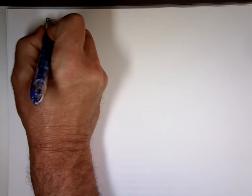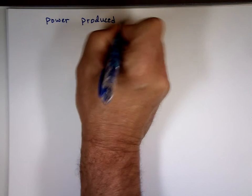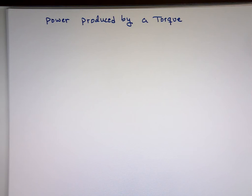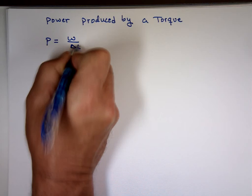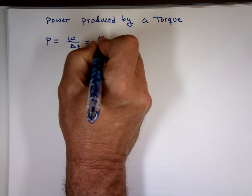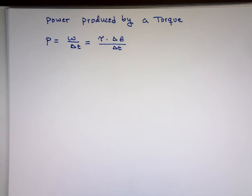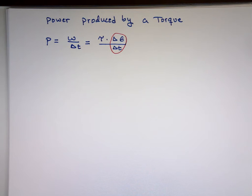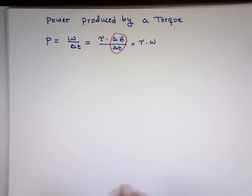What about the power? The power produced by a torque. We define power as the work done divided by delta T, the change in time. That's what power, definition of power, work over time. Well, we just finished saying work is torque times delta theta divided by delta T. And what is delta theta over delta T? Isn't that speed? So the power is torque times ω. That's how you calculate the power.